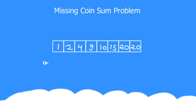I will initially assume that my answer is one. Then I will iterate over the elements of the array starting from one. If one is present in the array, my answer could be two, and I move forward. If two is also present, that cannot be the answer either, and so on. Therefore it is best to sort the given array in ascending order.